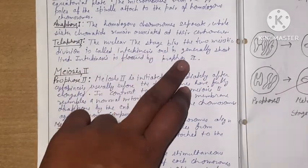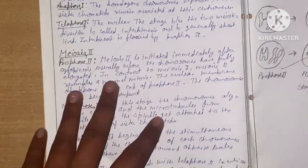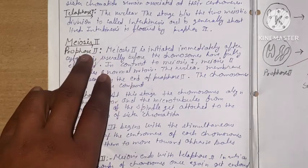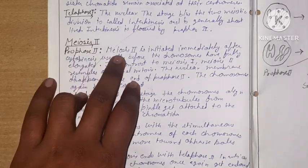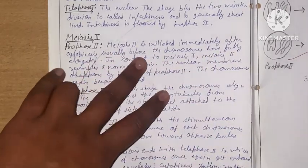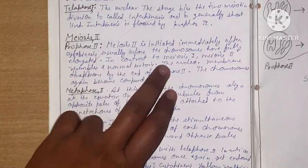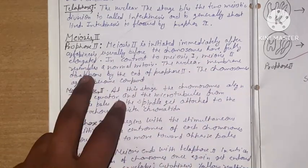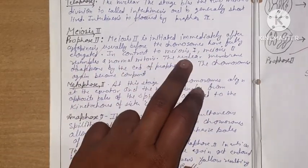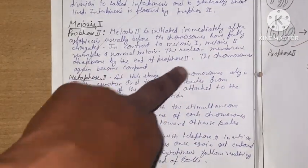The nuclear stage between the two meiotic divisions is called interkinesis and is generally short-lived. Interkinesis is followed by prophase II. Meiosis II is initiated immediately after cytokinesis, usually before the chromosomes have fully elongated. In contrast to meiosis I, meiosis II resembles normal mitosis. The nuclear membrane disappears by the end of prophase II and the chromosomes become compact.